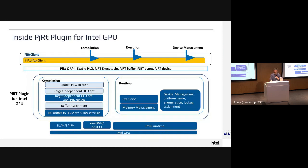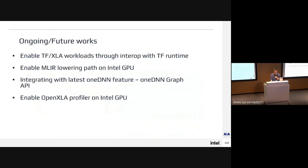Because the PJRT runtime concept is so high-level, it gives us a lot of flexibility in how to implement it — our own memory management and device management, relatively easy compared to the earlier stream executor interface. Looking forward, we'll continue working with Google's runtime team to ensure TensorFlow XLA workloads run on top of the plugin, track MLIR lowering paths for Intel GPU, look at integrating the OneDNN graph API, and explore extending the OpenXLA profiler to run on Intel CPUs.